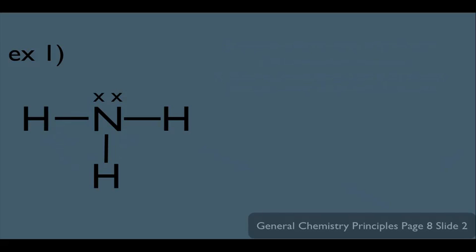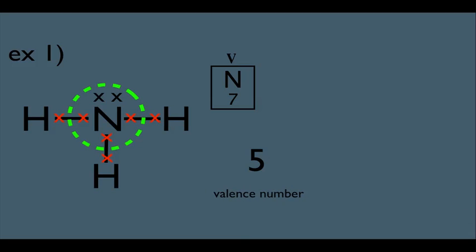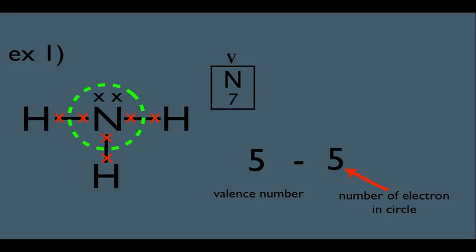Let's try to figure out the formal charge, this time for nitrogen. Mentally circle it, which cuts the bonds right in half. Nitrogen is in column five of the periodic table, which means he has five valence electrons. Count the electrons in the circle: the lone pair on top of nitrogen is one and two, and the three involved in the bond makes five. Five minus five is zero, so nitrogen has a zero formal charge.